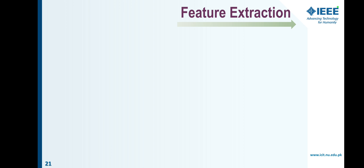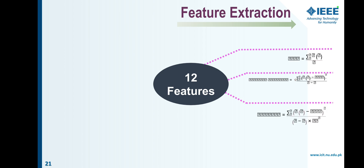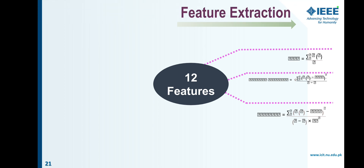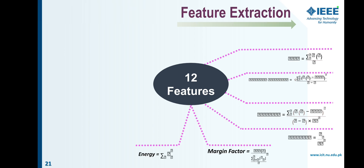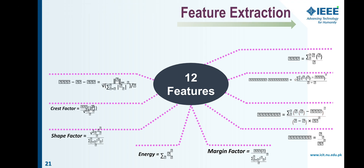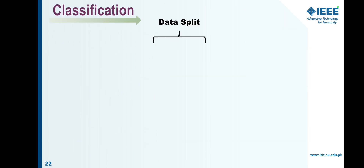For feature extraction, we acquired a total of 12 features in the time domain. These features include mean, standard deviation, skewness, kurtosis, margin factor, energy, shape factor, crest factor, P2P, RMS, log energy, Shannon energy, and impulse factor.